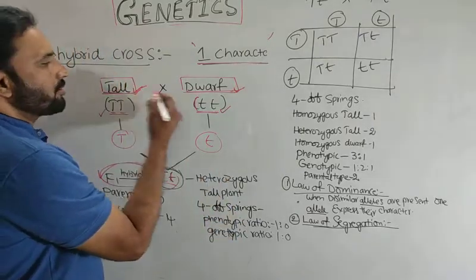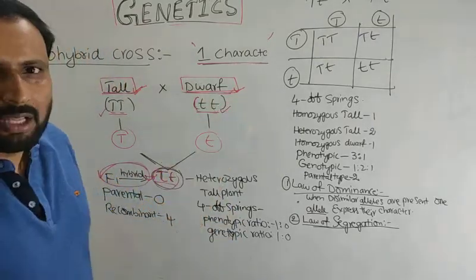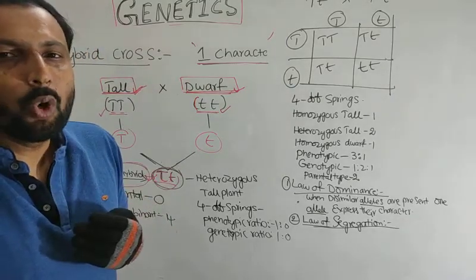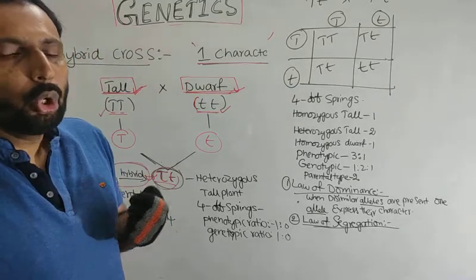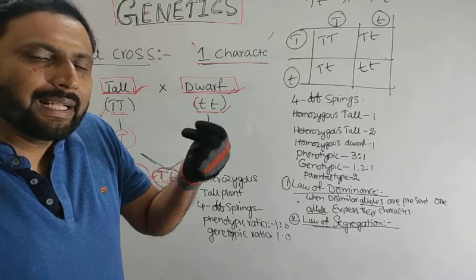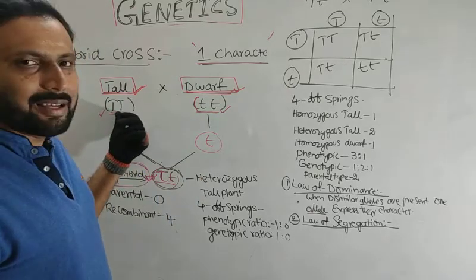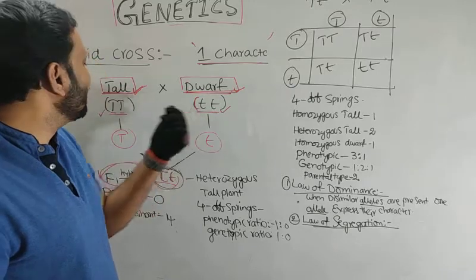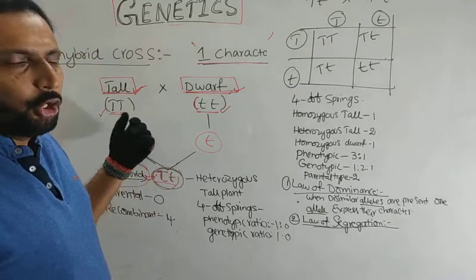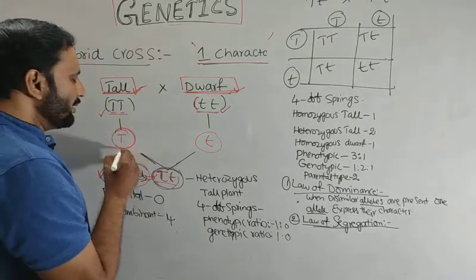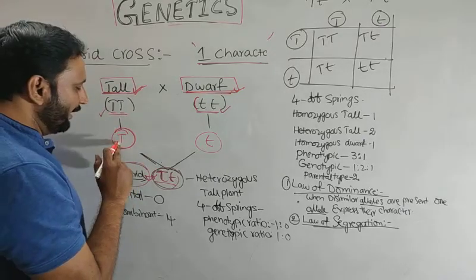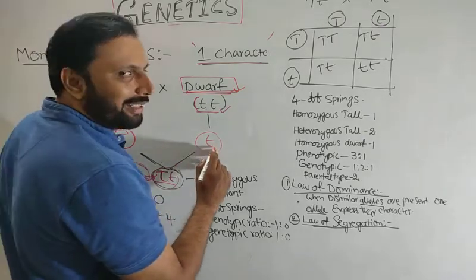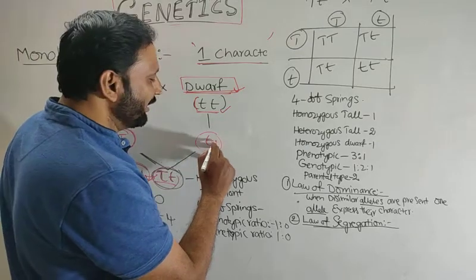The plants may be tall or dwarf. This tall plant, I am taking the parent as homozygous tall. Homozygous tall means the alleles are similar. Here also the alleles are similar — small tt, here capital TT. The gamete contains only one type of allele: capital T. Here the gamete contains only one type of allele, that is small t.